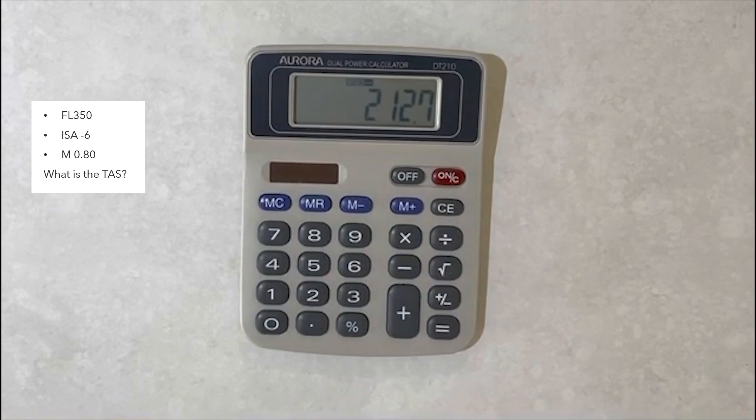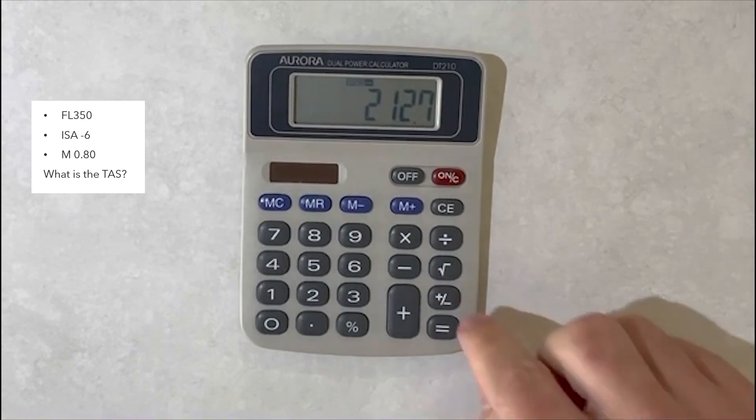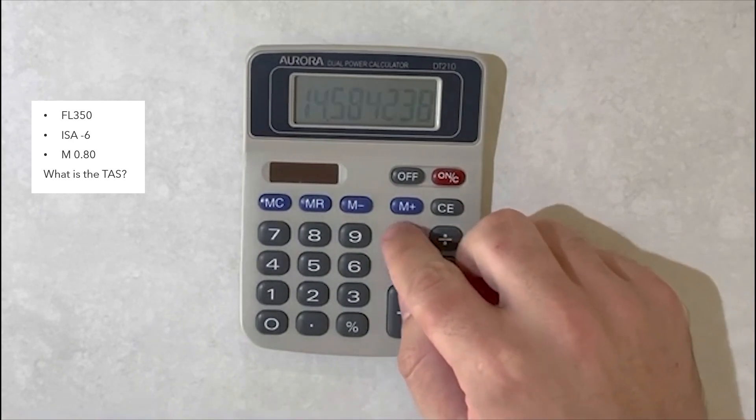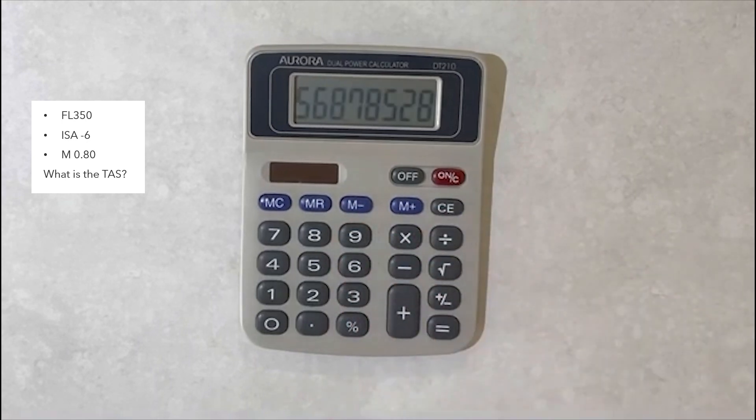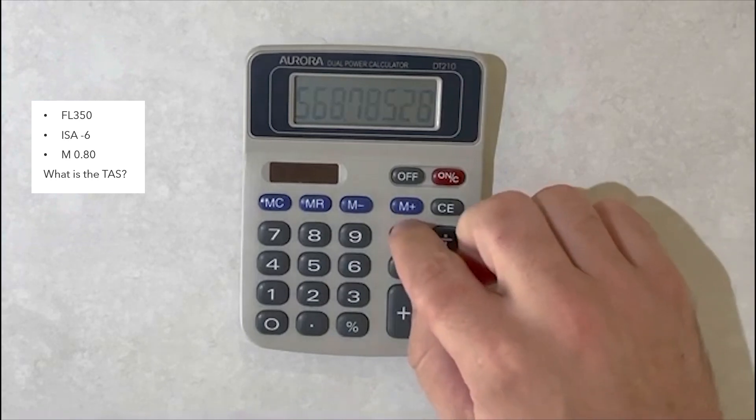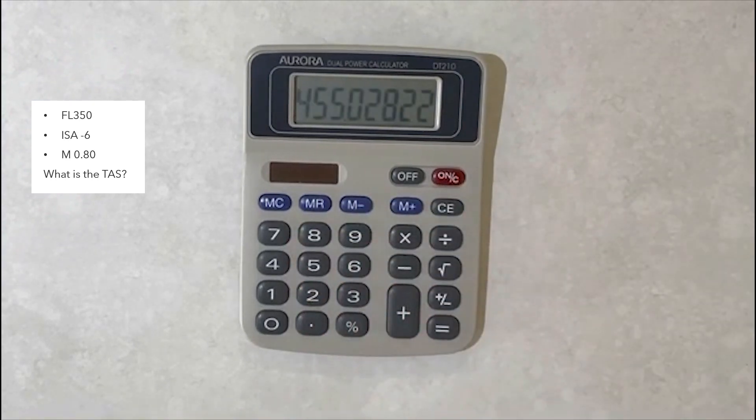Now we can do the flow. We will go equals, plus minus square root, multiply by 39. The number once you hit equals will be the speed of sound. We are looking for the TAS at 0.8 so we will go times 0.8. This number here is going to be your true airspeed, flight level 350, ISA minus 6 and Mach 0.8.